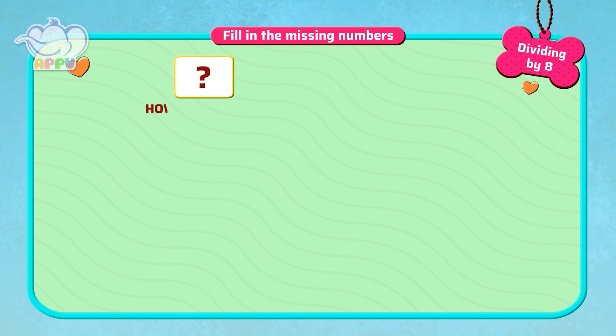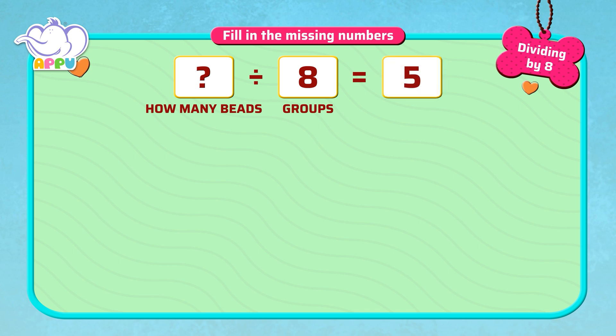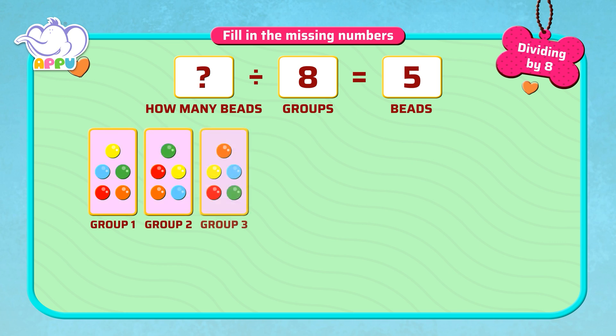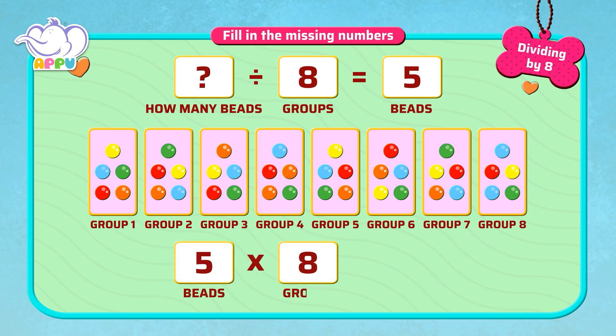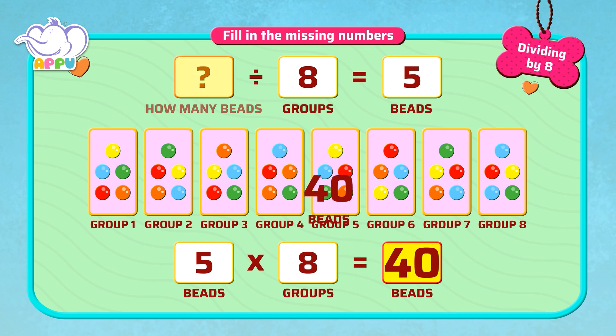We have to find out how many beads, when divided into 8 groups, gives us 5 beads. We know that 5 beads in 8 groups equals 40. How do we do this? We use multiplication that we learned earlier. 5 times 8 equals 40. So the answer is 40. 40 divided by 8 equals 5. We write it as 40 by 8 equals 5.